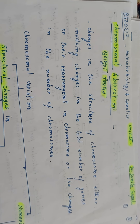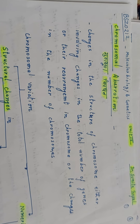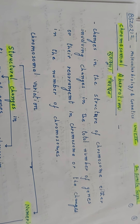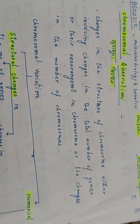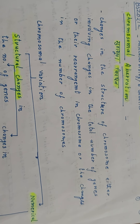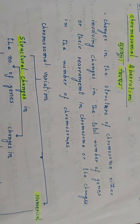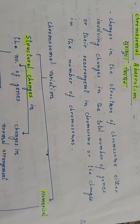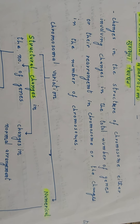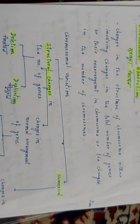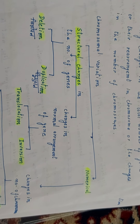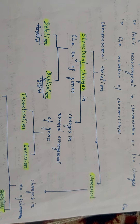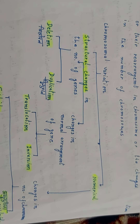Good morning students. BSZO 212, Unit 4 topic is chromosomal aberrations — changes in the structure of chromosome, either involving changes in the total number of genes, or in their arrangement, or in chromosomes, or in the change in the number of chromosomes. This is also known as chromosomal variations.